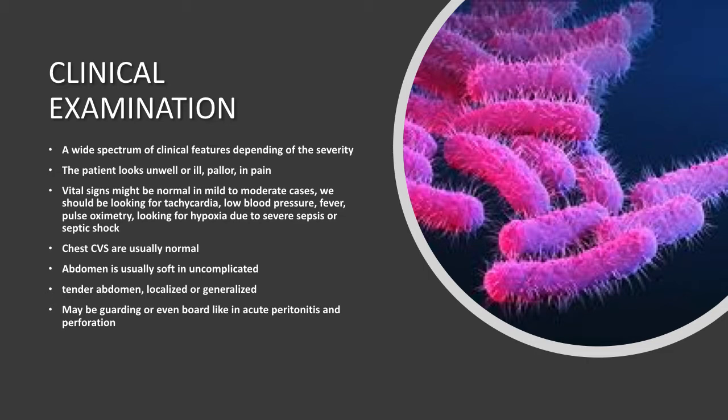Chest and cardiovascular systems are usually normal unless the patient has known disease. Abdominal examination is paramount. Look for soft abdomen or board-like abdomen in patients with surgical complications like perforation. They might have localized tenderness due to localized peritonitis.